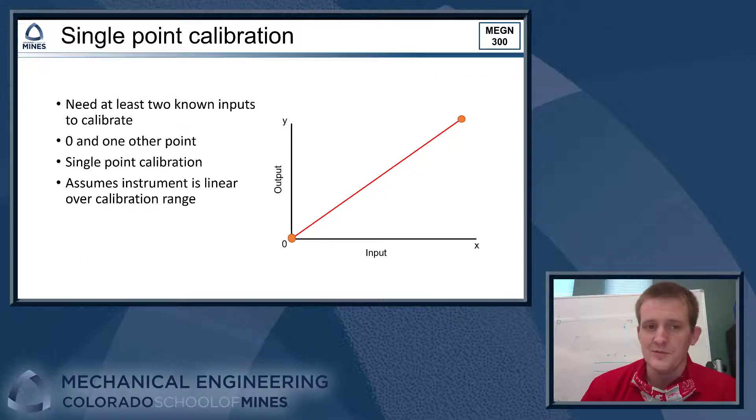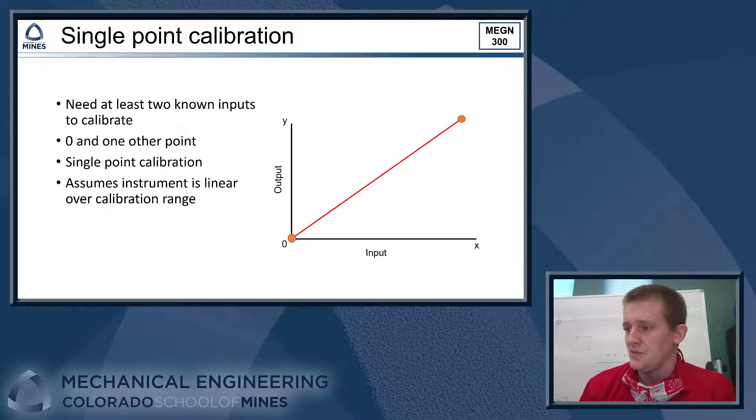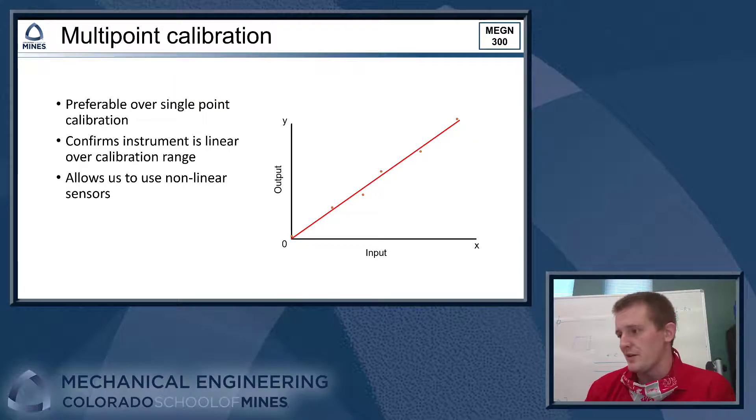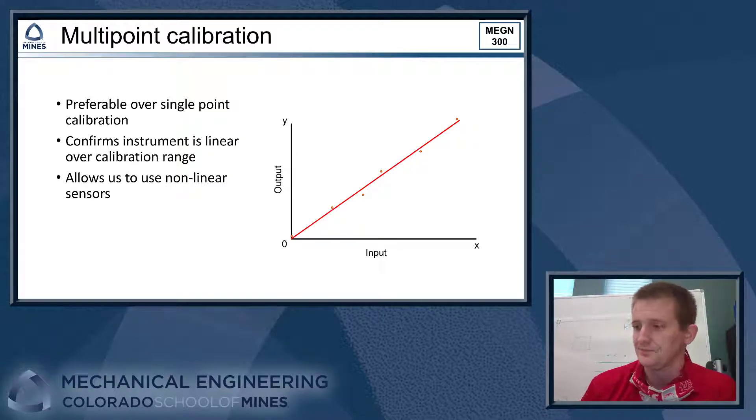All right, so to perform a calibration, we always need at least two points so that we can draw a line between them. We can do what's called a single point calibration where we know zero and then one other point. So we have a single point beside zero, and we use that for our calibration. This assumes that the instrument is linear over the calibration range, which may or may not be a good assumption. So it's always preferable to do a multipoint calibration where we have multiple standards that we apply to our instrument, and we build the calibration curve. This confirms that the instrument was linear over a calibration range if the instrument is in fact linear, but it also allows you to do things like use a nonlinear sensor. So your thermistor is a good example of that where you have this log function that describes how the thermistor works. In that case, we can build that log function by taking a multipoint calibration and fitting data to that multipoint calibration curve. And that allows us to use devices that are nonlinear.